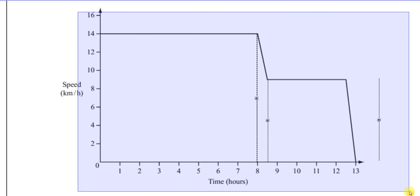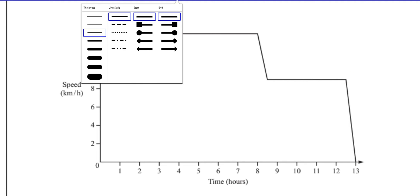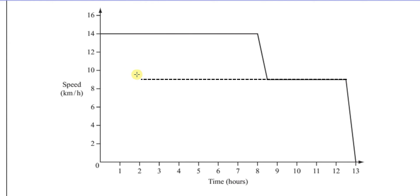...is if we considered a line going horizontally across from 9 to this point here. So if I draw a line from here going across, that line, that's 9 o'clock here, or sorry, that's the speed of 9 kilometers per hour.